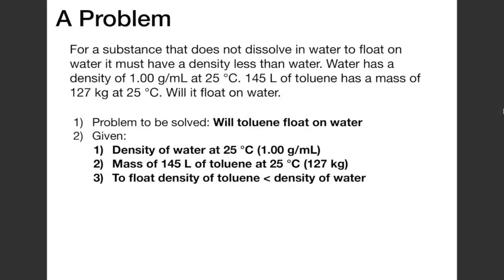We're also given that a volume of 145 liters of toluene at 25 degrees C has a mass of 127 kilograms. And finally, we're given that in order to float on water, the density of toluene has to be less than the density of water.